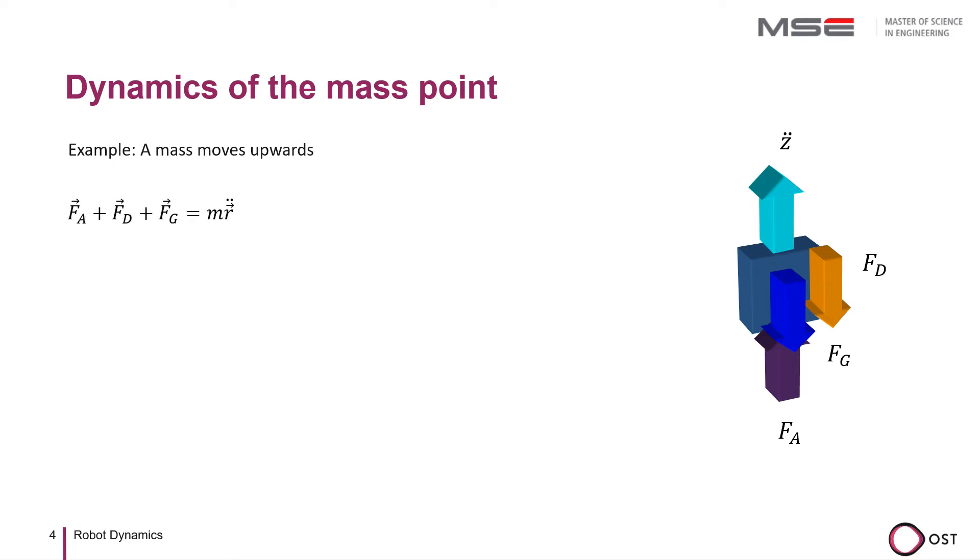Let's put that into our equation of motion. We consider the driving force to be positive if it is pointed in the z direction. If we assume that the friction is coulomb friction, the amount is constant and acts in the opposite direction of the sign of the movement, which we take into account with the signum function. However, this only applies to non-zero velocities. The gravitational force is m times g and in the negative z direction.